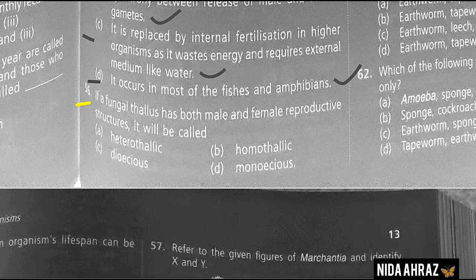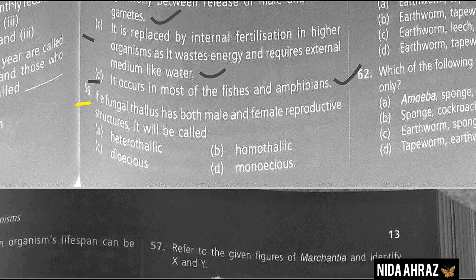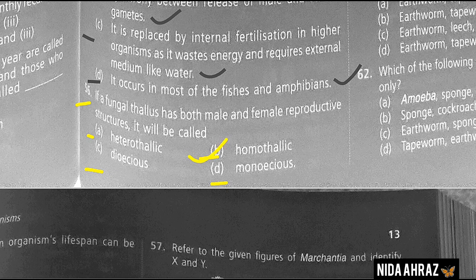If a fungal thallus has both male and female reproductive structures, it will be called heterothallic, homothallic, dioecious, or monoecious. The correct choice is option B: homothallic.